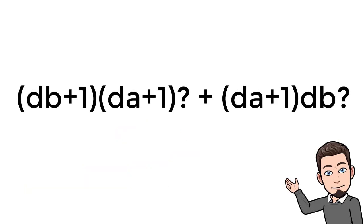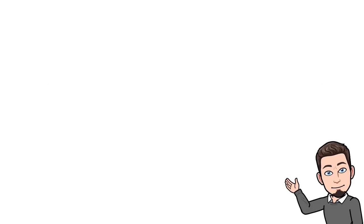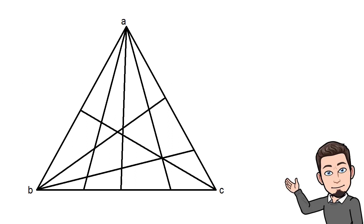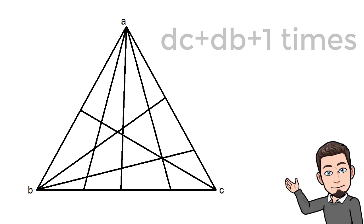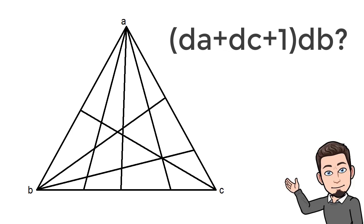At the end, the number of triangles in Chapter 2 cases equals (da+1) multiplied by (da+1)?, plus (da+1) multiplied by db?. Now for the general form — Chapter 3 — the same ideas apply. We have first-degree triangles, but this time repeated (dc+db+1) times, and we have db? para triangles multiplied by (da+dc+1).